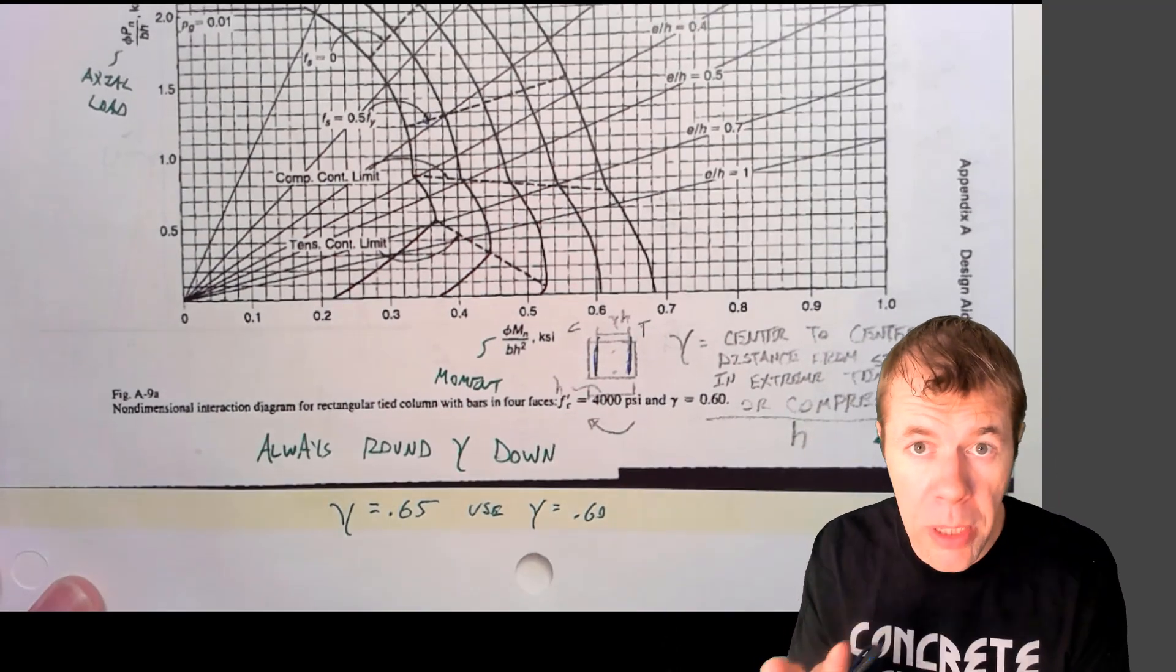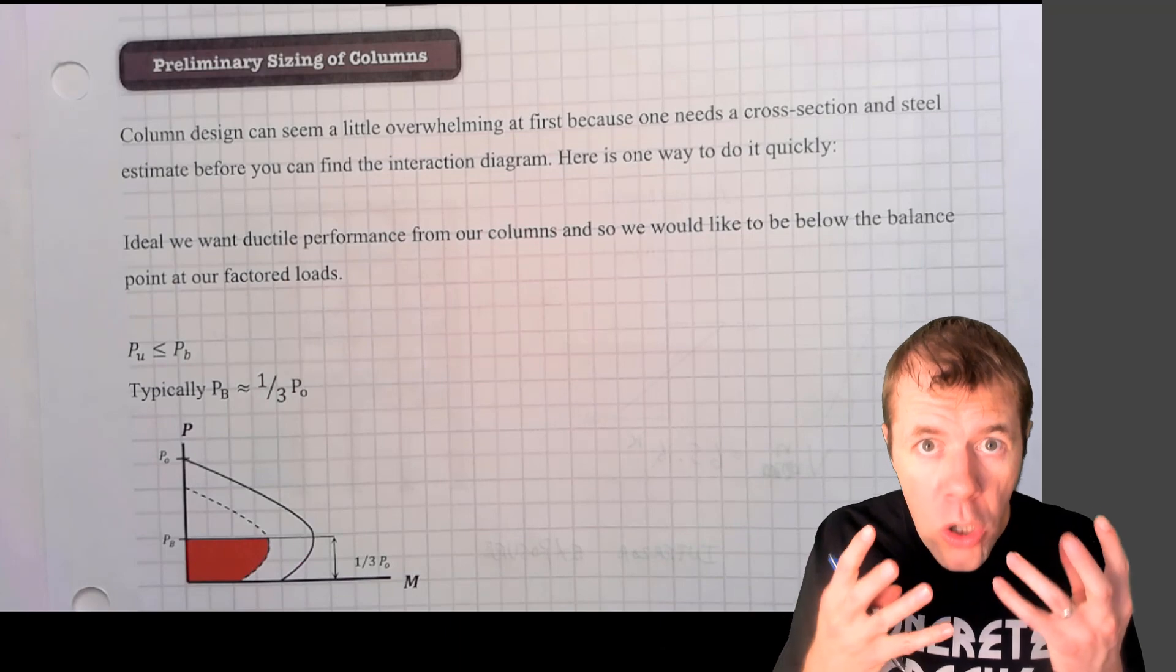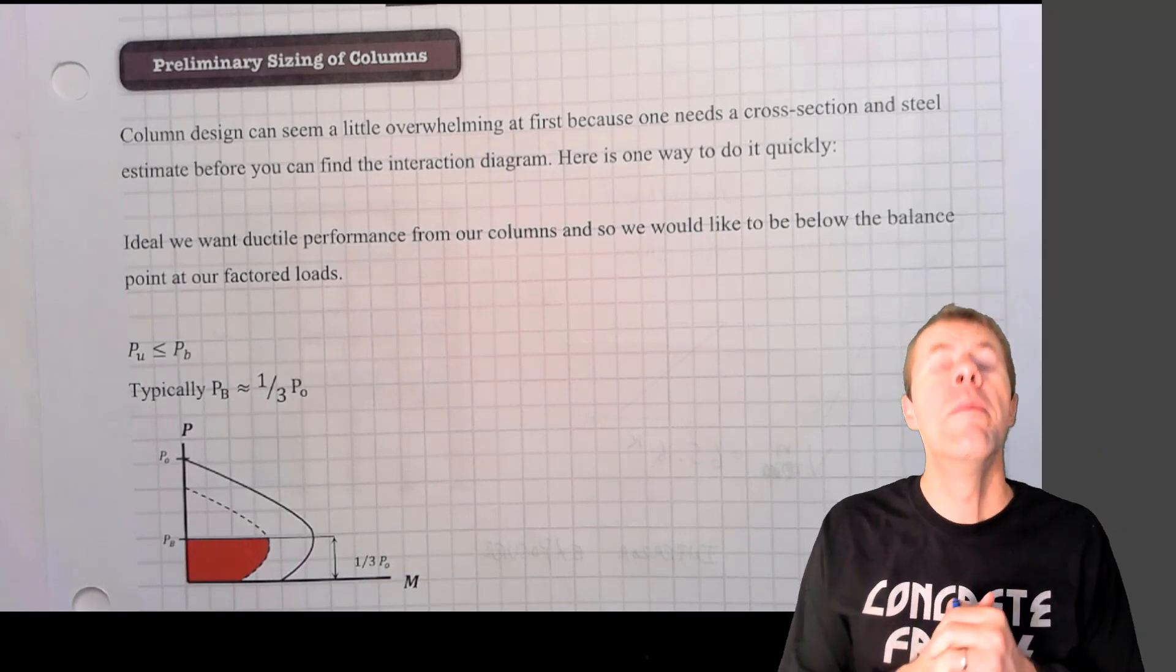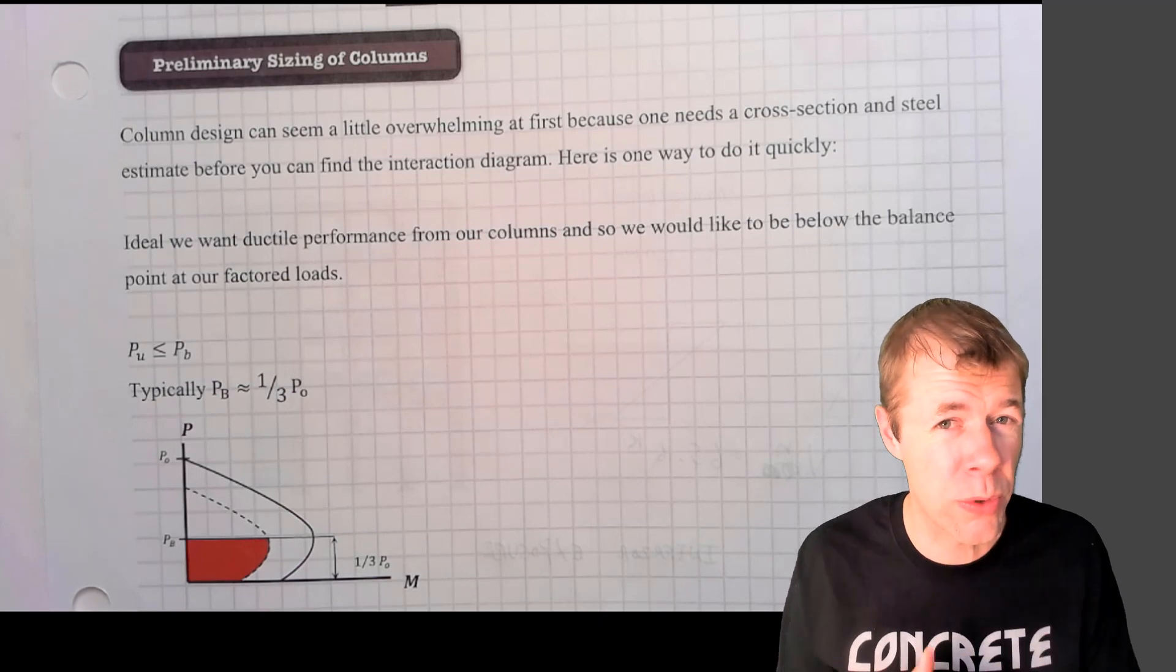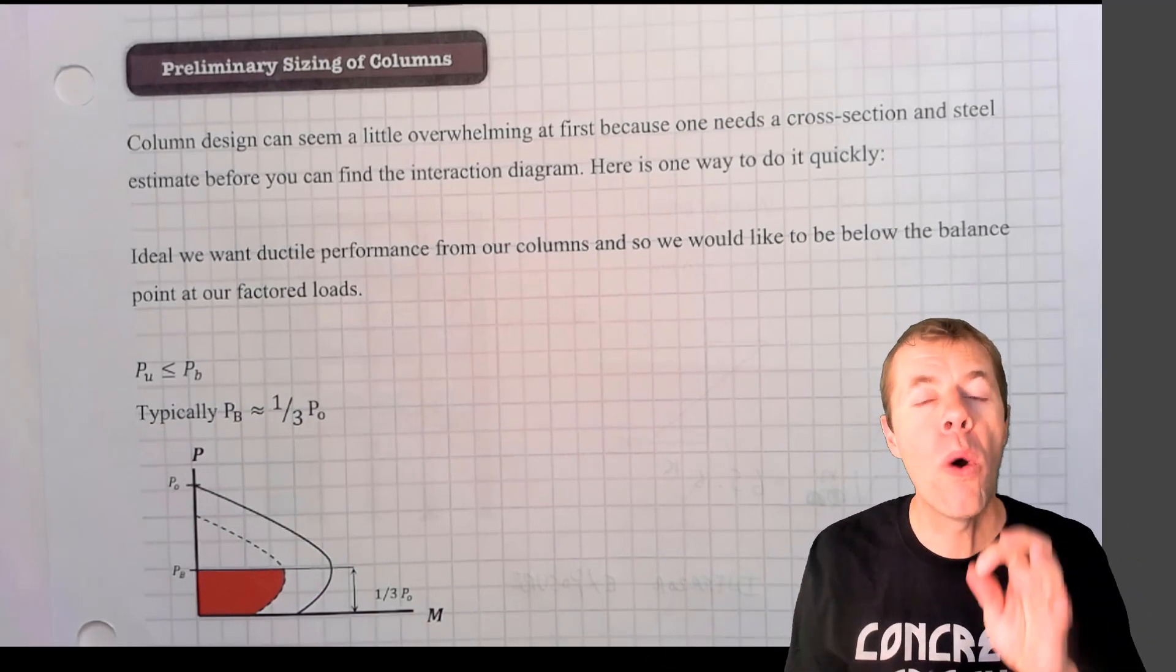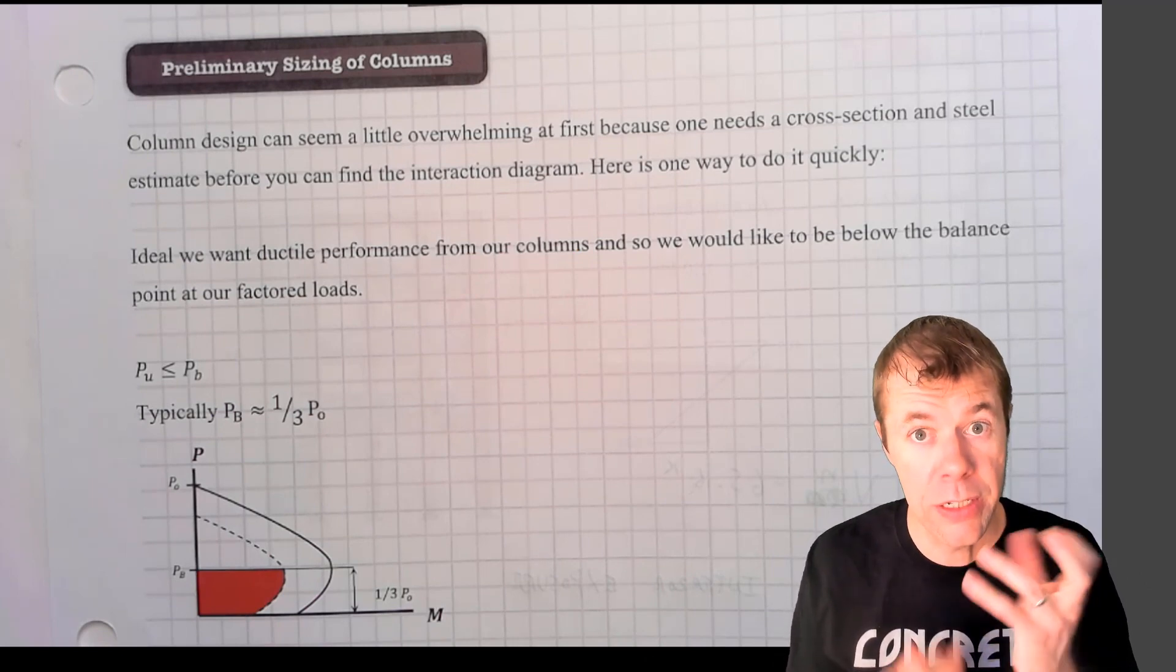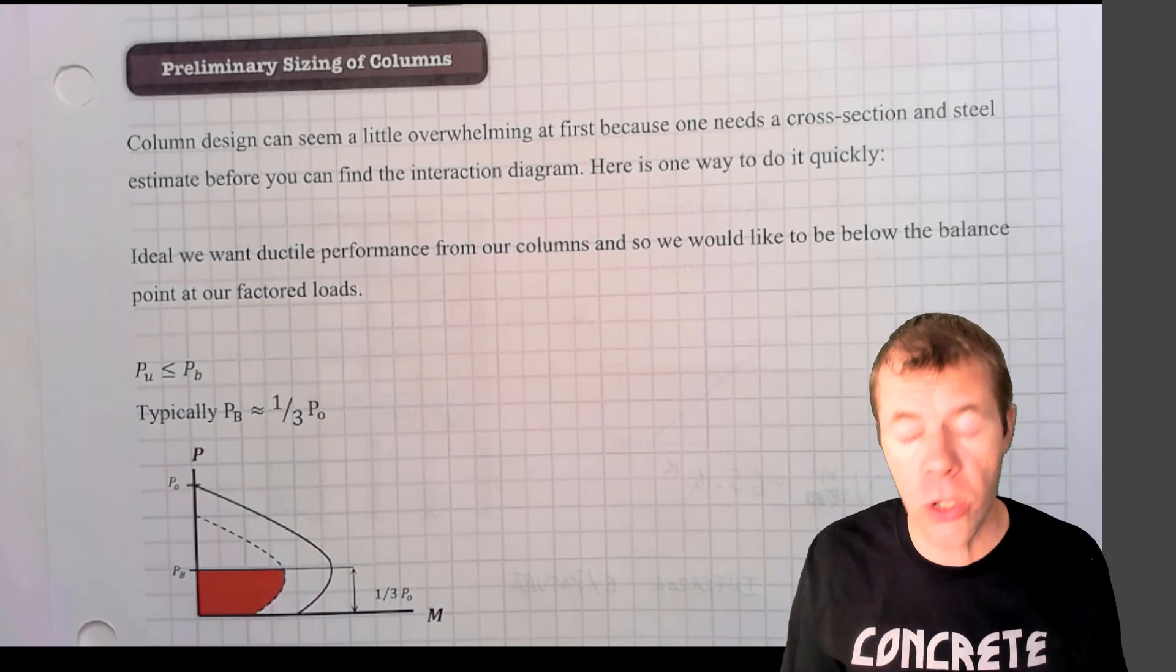Now you could try to interpolate between the charts, but that's usually too much trouble. Now there are two more tricks I'm going to give you, because I've just told you how to use a non-dimensional interaction diagram. It will make more sense once we work an example problem, but you still need to figure out what size column you need to use. And that's not trivial, but I'm going to give you two tricks to show you how to do it.